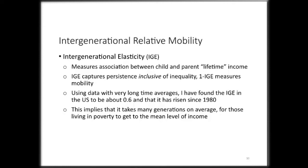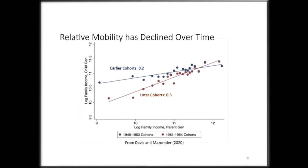Some research I did for my dissertation showed that the intergenerational elasticity was closer to 0.6, which suggests it would take many more than three generations for gaps in income to go away. In this slide, I plotted along the x-axis the income of parents and on the y-axis the income of kids. Basically, the slope of that line is telling you what the intergenerational elasticity is.